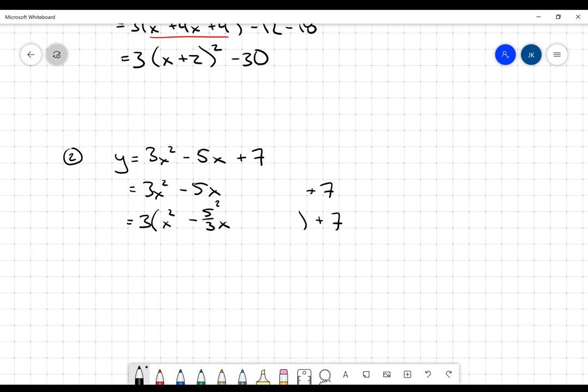I recognize there should be a factor of two inside, which means I divide five-thirds by two to get five-sixths. That's the value I'll add and subtract. So it's x² minus five-thirds x, plus five-sixths squared, which is plus 25 over 36, then immediately subtract 25 over 36 plus seven.